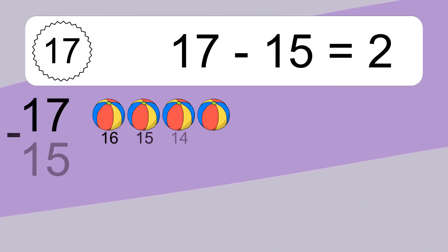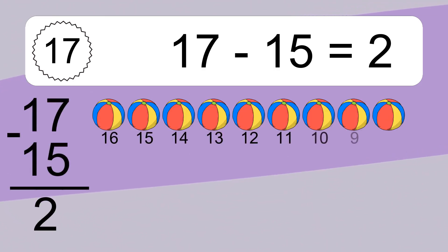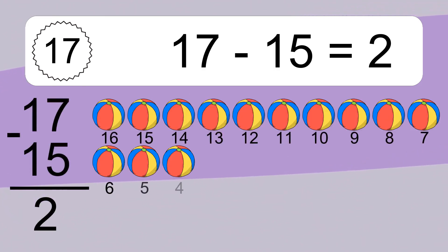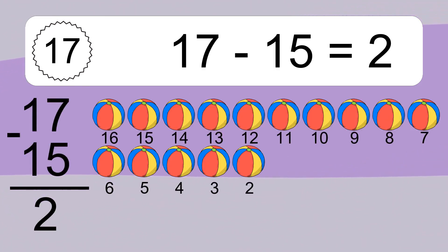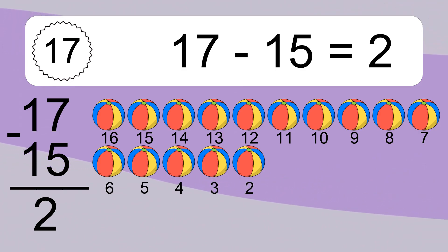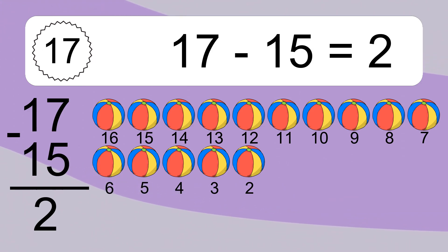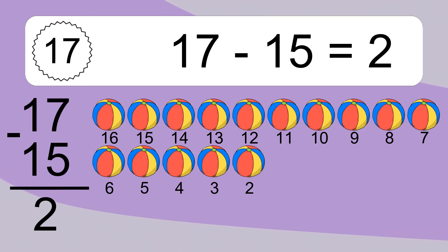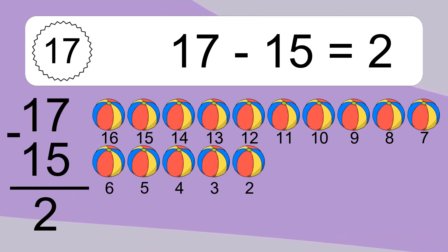17 minus 15 equals 2. Let's count it: 16, 15, 14, 13, 12, 11, 10, 9, 8, 7, 6, 5, 4, 3, 2.